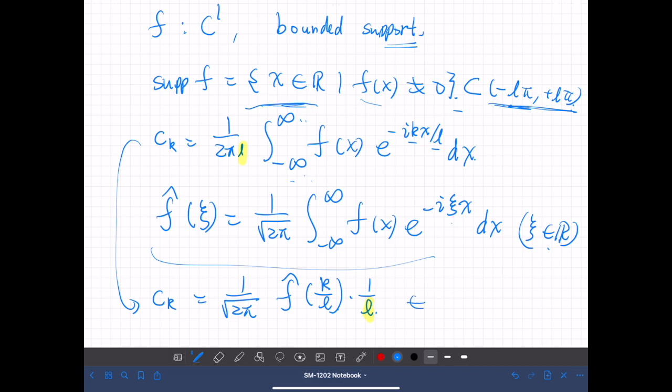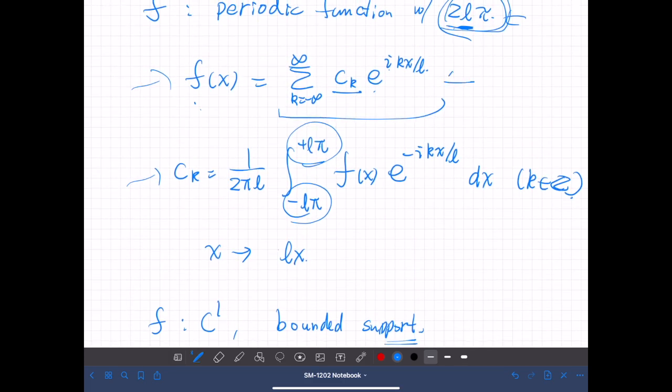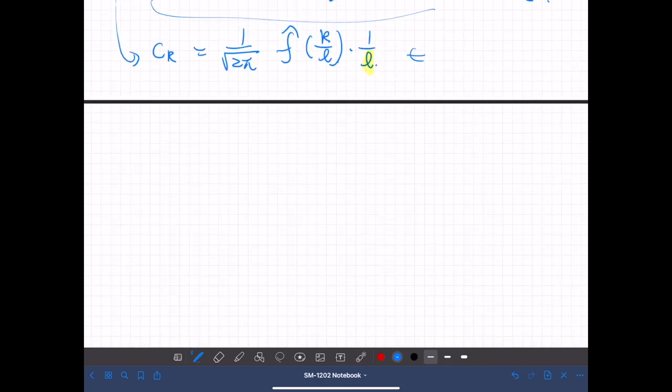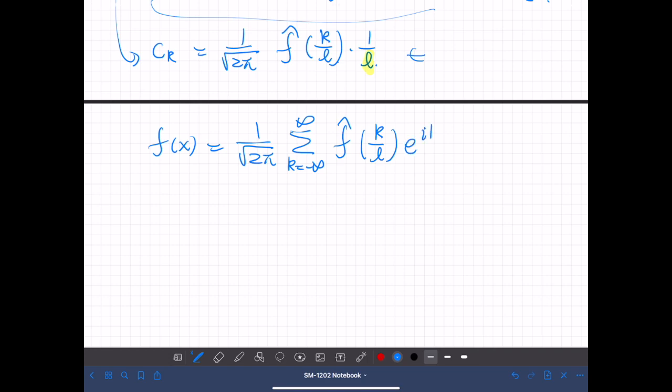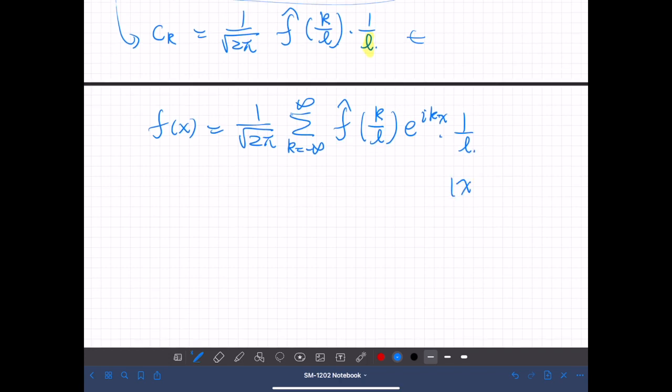Now let's put this coefficient into this expression. Then we have f(x) equals summation from negative infinity to positive infinity, f hat of k over L times 1 over L times e to the ikx over L, and absolute value of x is less than or equal to Lπ. Then fix x and let L go to infinity.